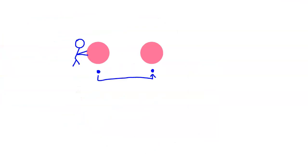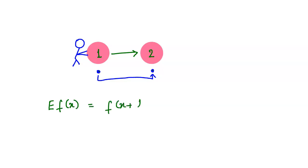Before we proceed, let us recall what these three operators are. First is the shift operator. It is denoted by E, and it is defined as: E f(x) = f(x + h). That is, it shifts the value of the function from position x to x + h.